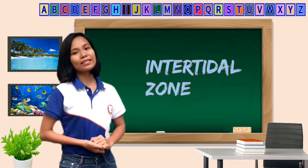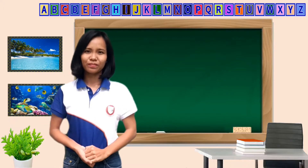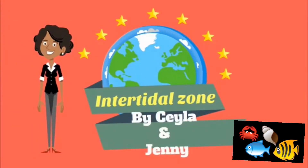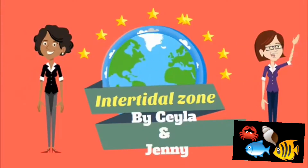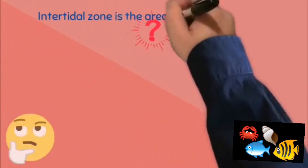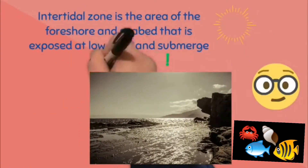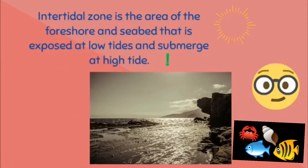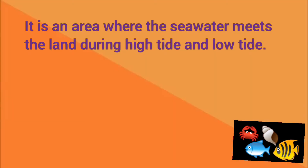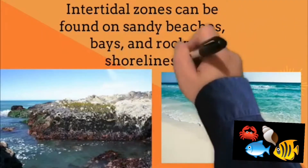Now, to find out what is the intertidal zone, let's watch this video. Intertidal zone is the area of the foreshore and seabed that is exposed at low tides and submerged at high tide. It is an area where the seawater meets the land during high tide and low tide. Intertidal zone can be found on sandy beaches, bays, and rocky shorelines.